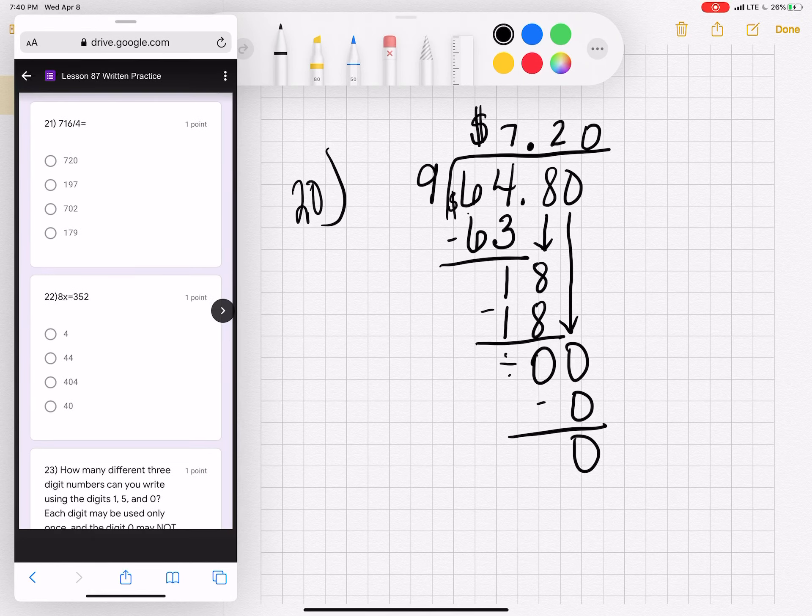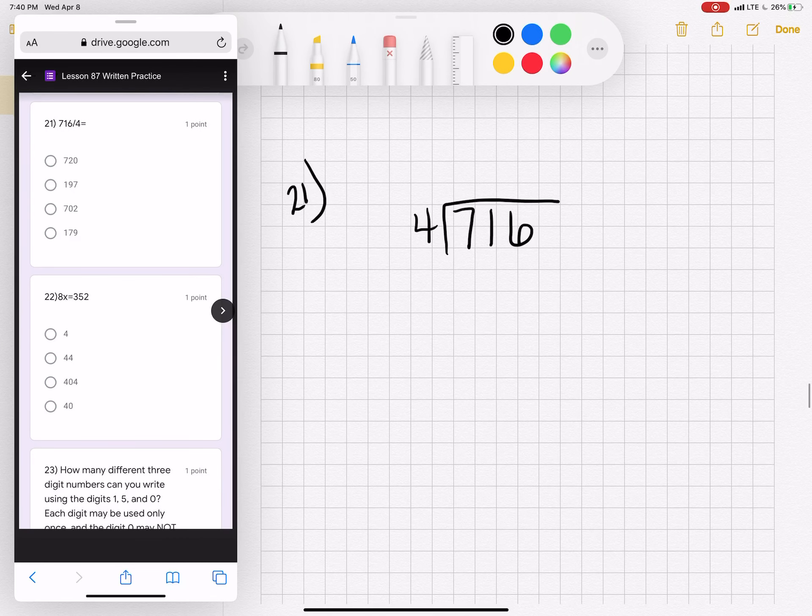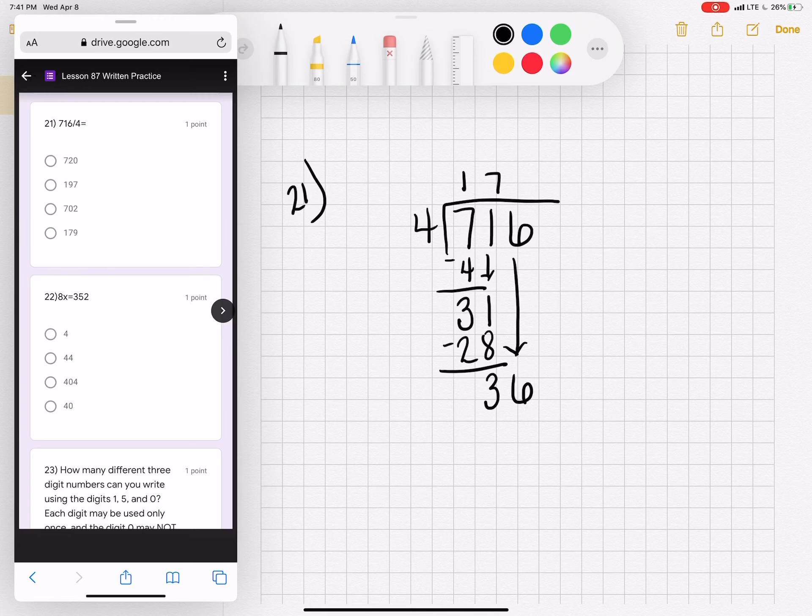Twenty-one. Seven hundred sixteen divided by four. Four goes into seven one time. One times four is four. Seven minus four is three. Bring down your one. Four times seven is twenty-eight. Is that as close as we can get? That leaves us with three. Bring down your six. What times four is thirty-six? Nine times four is thirty-six. And you have no remainder. Twenty-one is one hundred seventy-nine.